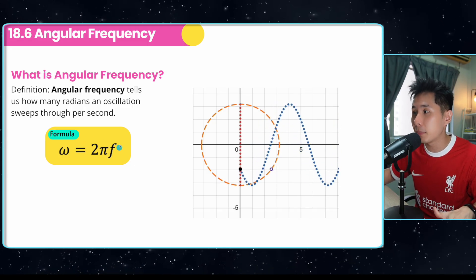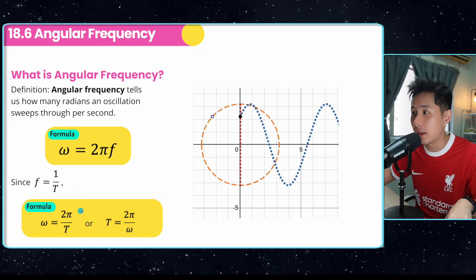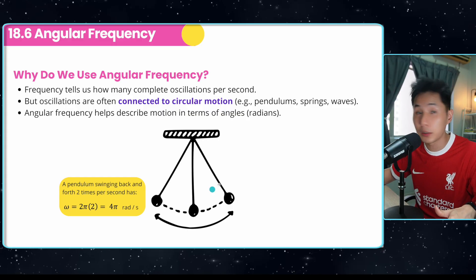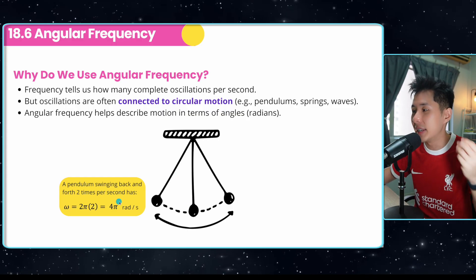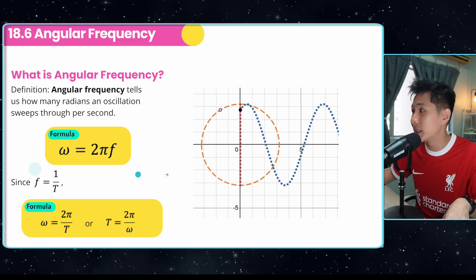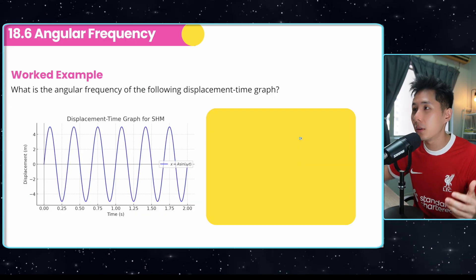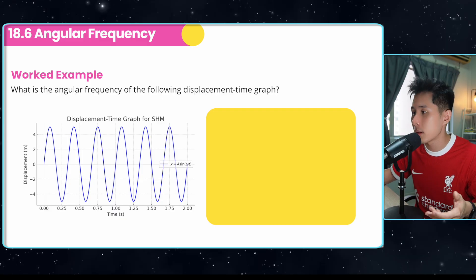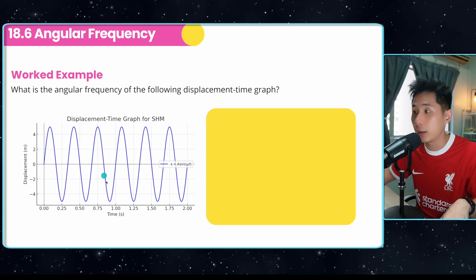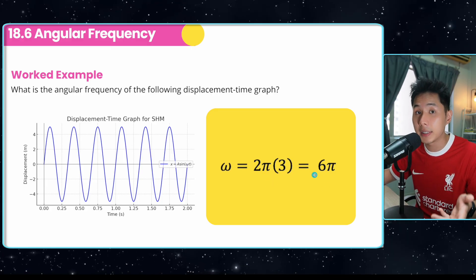To calculate angular frequency, multiply frequency by 2π, which represents one full circle. Since f = 1/T, you can also rewrite the formula accordingly. For example, if a pendulum swings back and forth two times per second, its frequency is 2 Hz and its angular frequency is 2π × 2 = 4π radians per second. For a worked example: a wave completing three cycles in one second has angular frequency 2π × 3 = 6π radians per second.